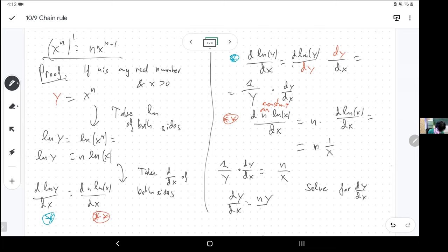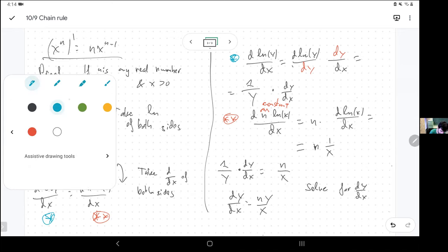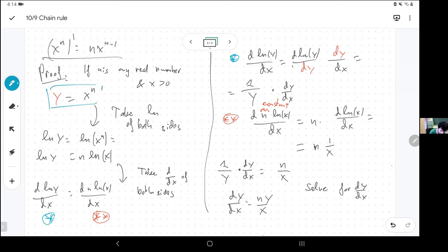So dy dx is ny over x. And that is the power rule that you know a lot. Because what is y? y is x to the n over x. So this is nx to the n over x, which is the same as nx to the n minus one.